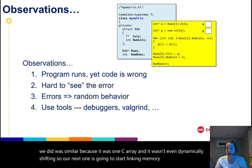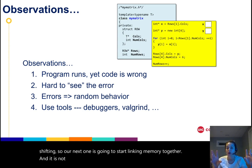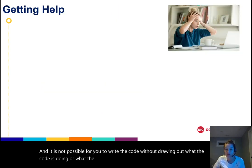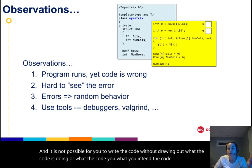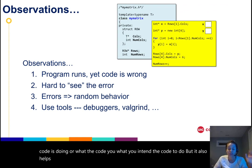And it is not possible for you to write the code without drawing out what the code is doing or what you intend the code to do. But it also helps when you have a problem. So you should diagram it when you write it, you should diagram it when you trace it.